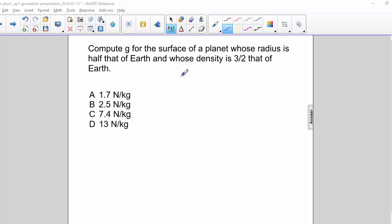Compute g for the surface of a planet whose radius is half that of Earth and whose density is three halves that of Earth. G is equal to four thirds pi G rho R.